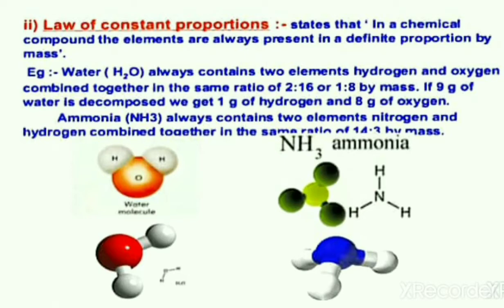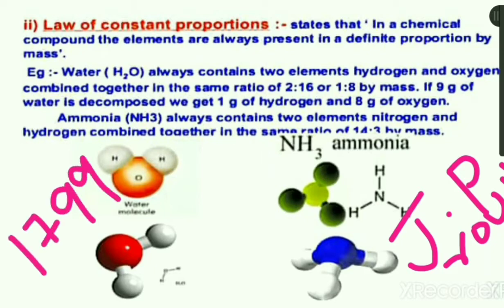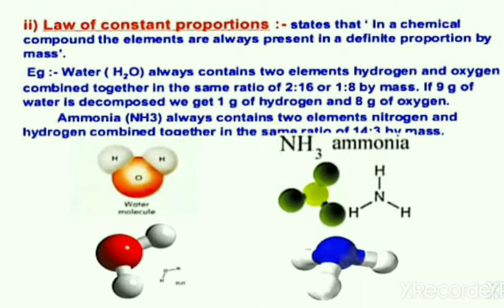The law of constant proportion was given by Joseph Proust, also written as J. Proust, in 1799. The law of constant proportion states that in a chemical compound, the elements are always present in a definite proportion by mass.